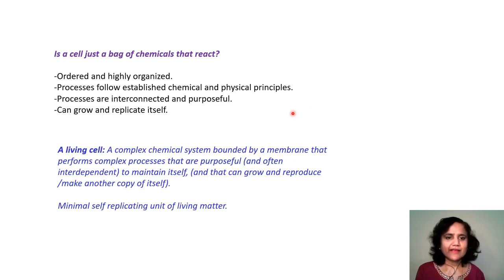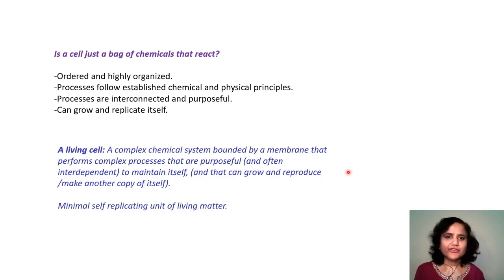A living cell can be defined as a complex chemical system bounded by a membrane that performs complex processes that are purposeful and often interdependent, in order to maintain itself and that can grow and reproduce — that is, make another copy of itself. Thus, a cell is a minimal self-replicating unit of living matter.